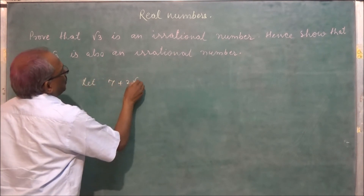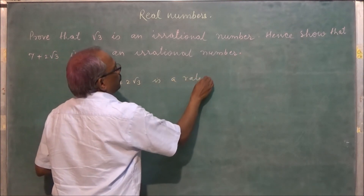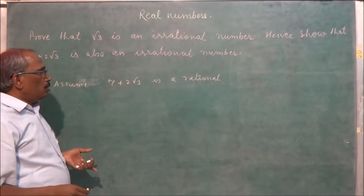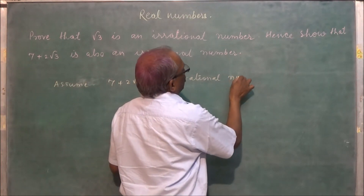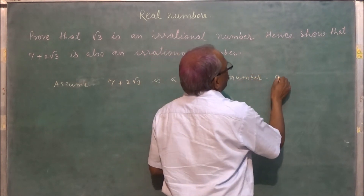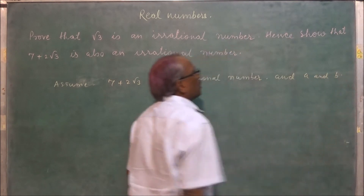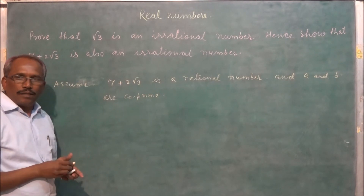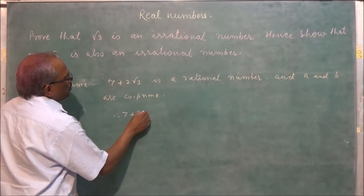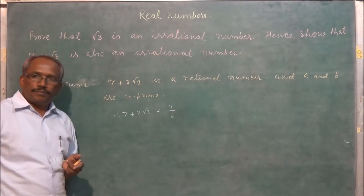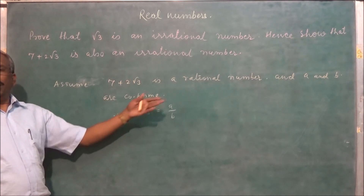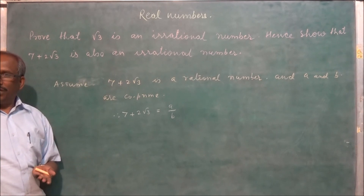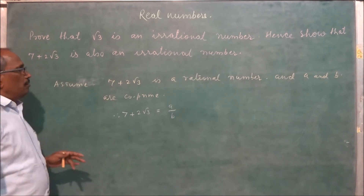Now for the second part: let us assume 7 plus 2 root 3 is a rational number. So assume 7 plus 2 root 3 is a rational number, and let a and b be co-prime integers. Therefore 7 plus 2 root 3 is equal to a upon b.